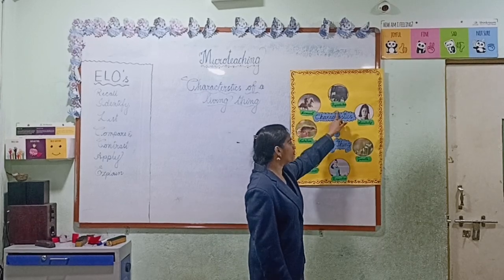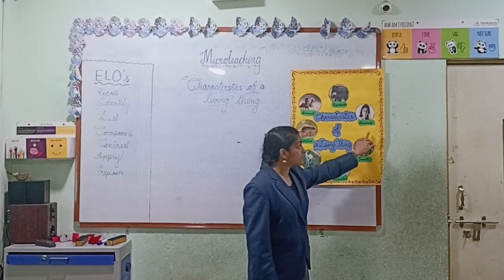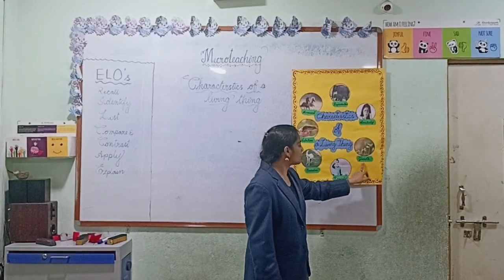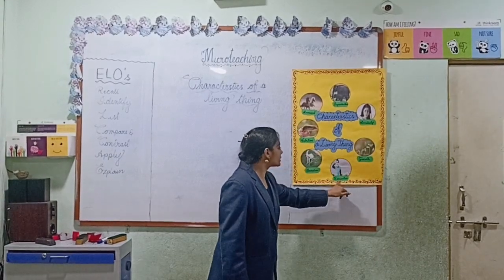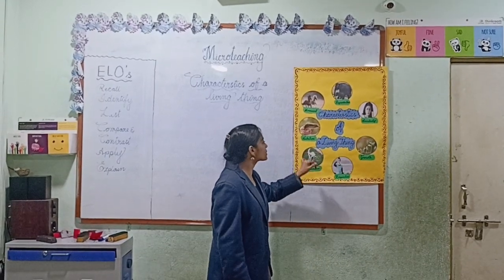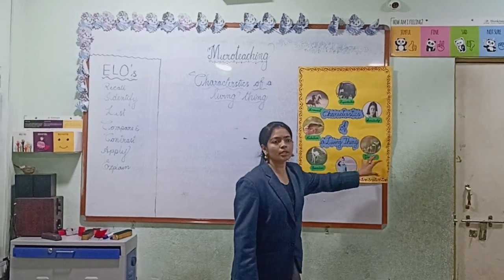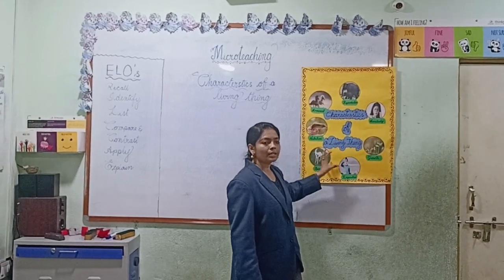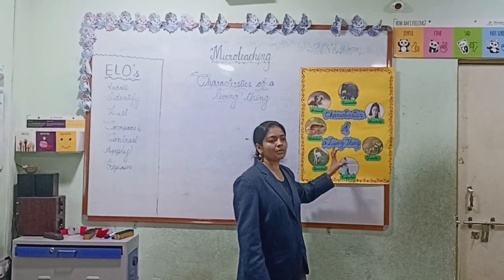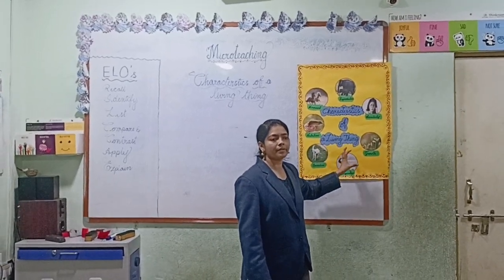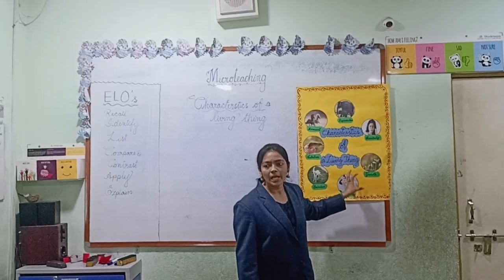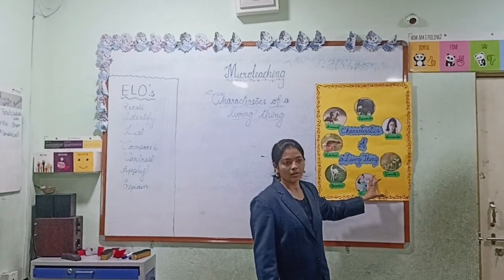The characteristics are: Movement, Reproduction, Sensitivity, Growth, Respiration, Excretion, and Nutrition. So these are the seven key features or characteristics of a living thing.